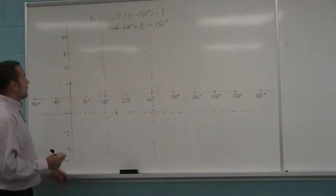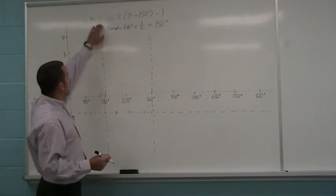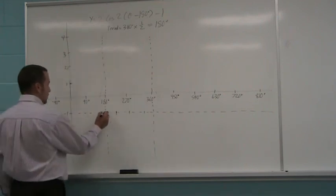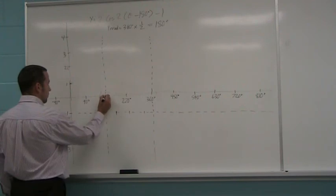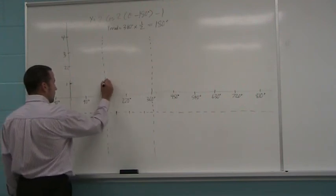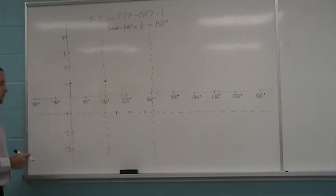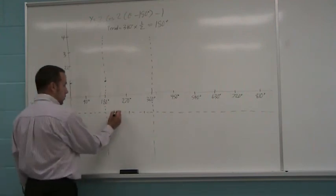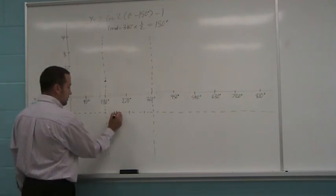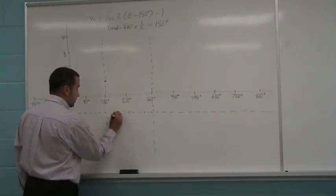Okay, so now we're going to take into account the amplitude of 2. Cos starts out at a local maximum, so we go up 1, 2. There's that point. We go over to the next quarter point. It's on the sinusoidal axis, so there's the next point.